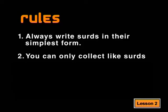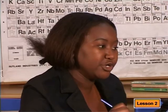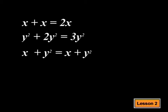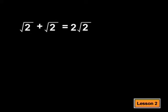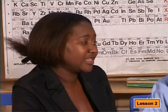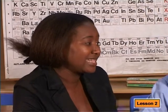You can only collect like surds. Like surds are similar to like terms. You can add x and x to get 2x, or y squared and 2y squared. But you cannot collect x and y squared. So, similarly, you can add root 2 and root 2 to get 2 root 2. But you can't collect root 2 and root 5.